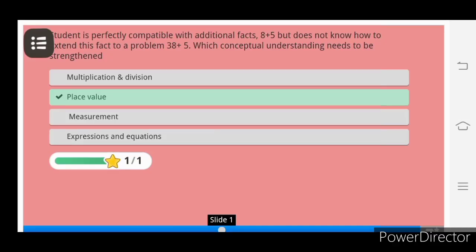In this case, the student is perfectly compatible with additional facts like 8 plus 5, but doesn't know how to extend this fact to a problem like 38 plus 5. Which conceptual understanding needs to be strengthened? This will be the place value.